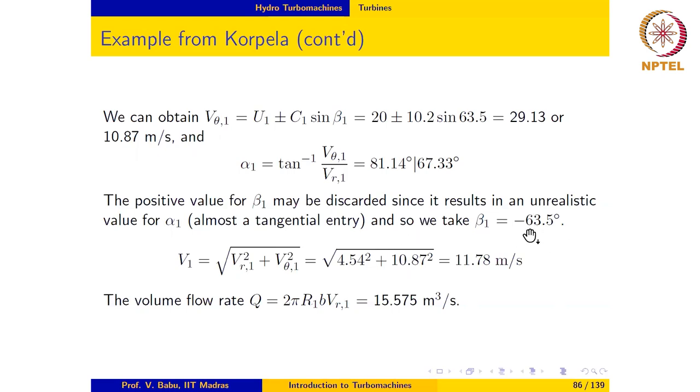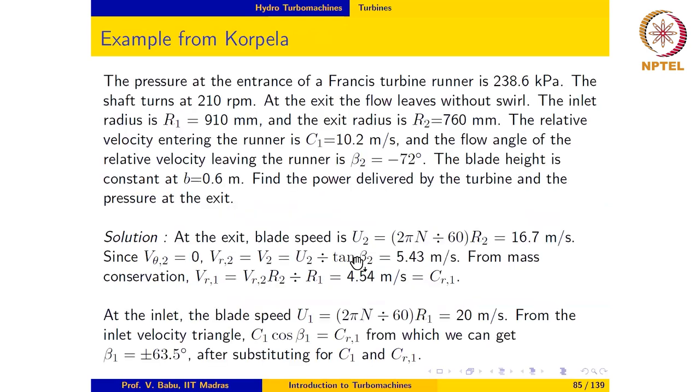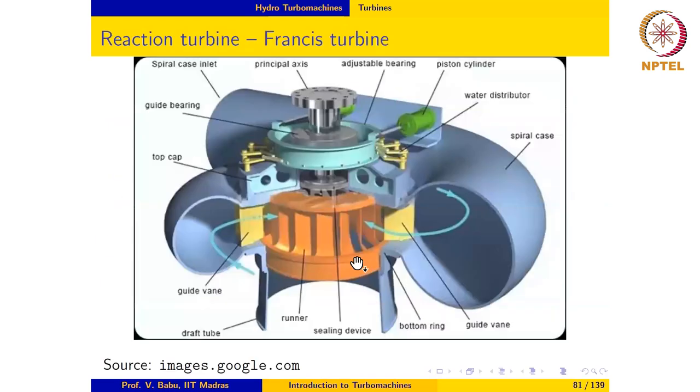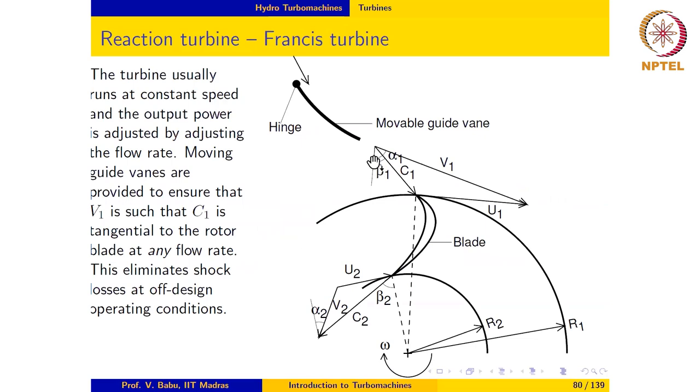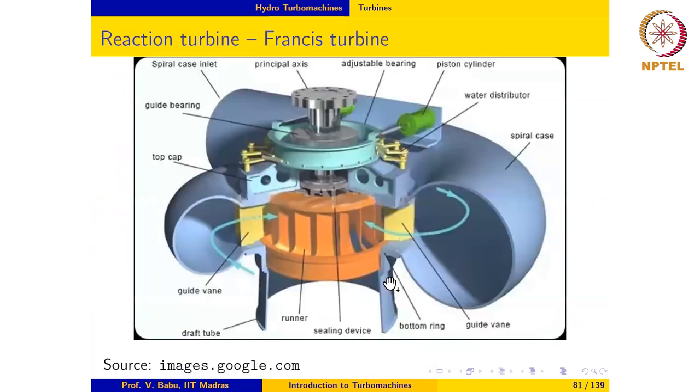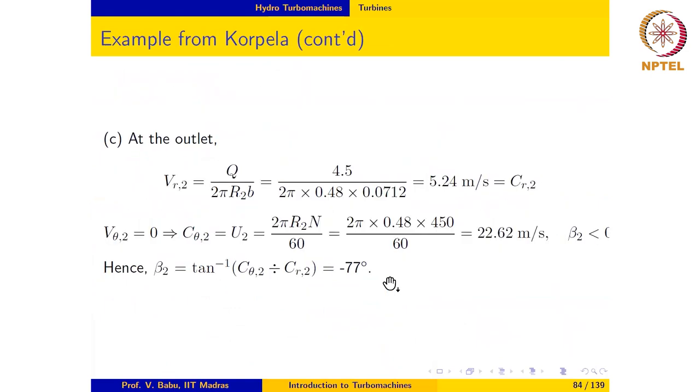Notice that the inlet velocity triangle in this case appears to be different from the way we have drawn here. α1 is positive whereas β1 is negative. That means α1 is such that V1 is in the counterclockwise direction to the radial direction and β1 is negative, which means C1 is going to be in the clockwise direction to the reference direction. So we need to keep that in mind when we do the calculations from here onwards.